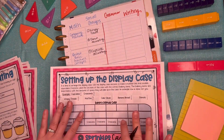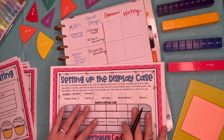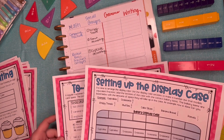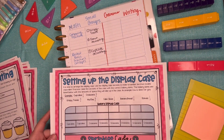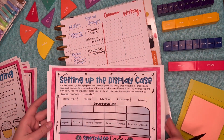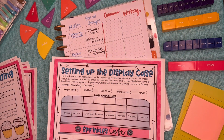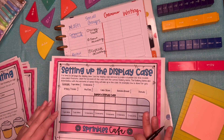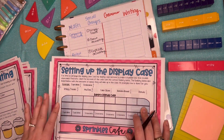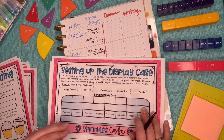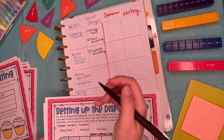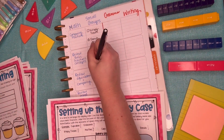Wednesday's activity comes with two versions and I'm actually going to be utilizing both of them in the classroom. There's an easier version and a more challenging version — I love that all of our PBL resources have that built-in differentiation. I'm going to be using the more challenging version for students I know are ready for that extension, and the less challenging version for students who are still developing these skills. Wednesday's work is all about setting up the display case.